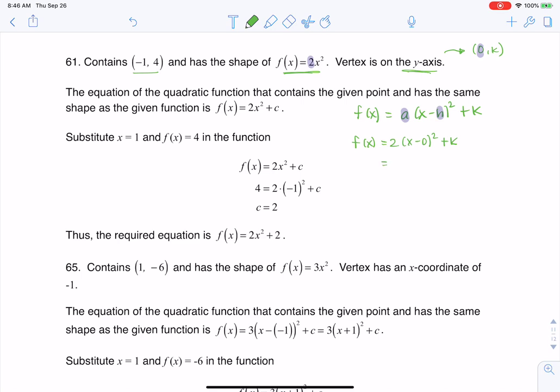If I simplify that a little bit, this is 2x² + k. And I just want to mention why I have a k over here and a c over here. It has to do with the two forms of a parabola.